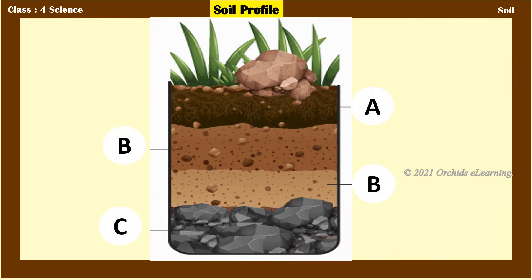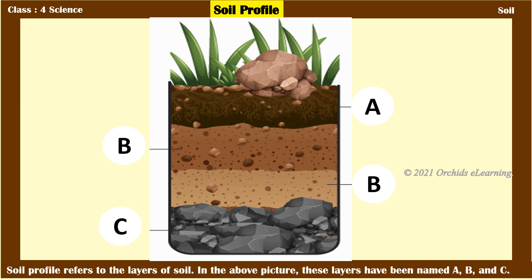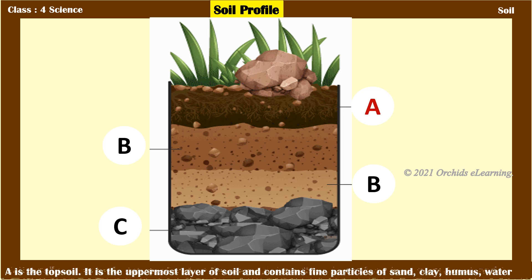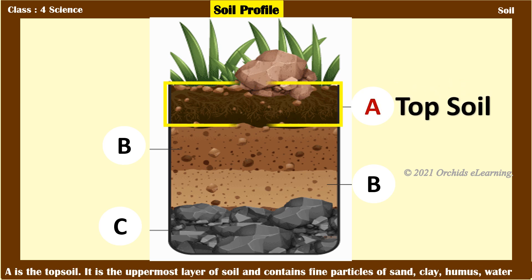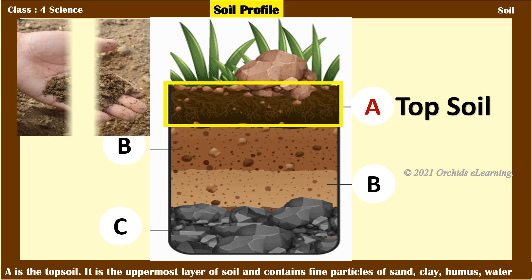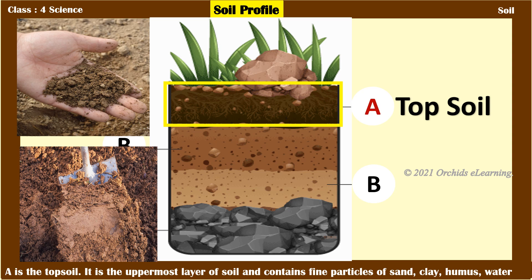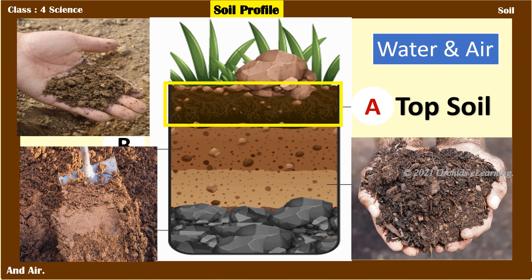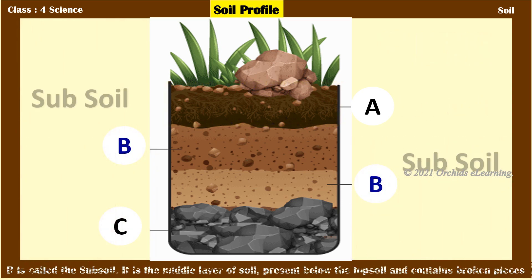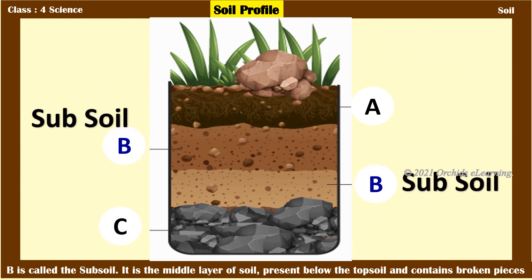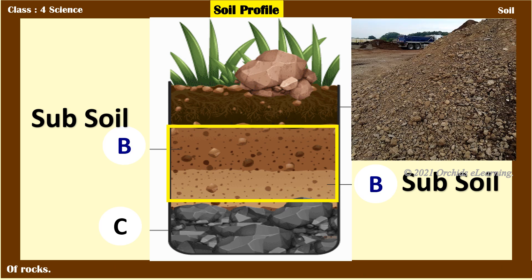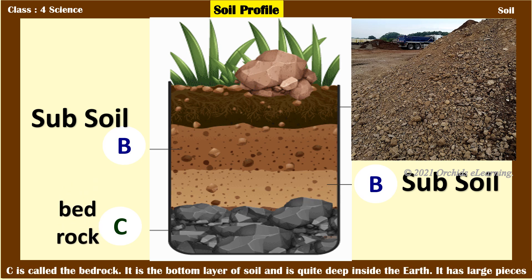Soil profile refers to the layers of soil. In the picture, these layers are named A, B, and C. Layer A is the topsoil — the uppermost layer, containing fine particles of sand, clay, humus, water, and air. Layer B is called the subsoil — the middle layer below the topsoil, containing broken pieces of rocks. Layer C is called the bedrock — the bottom layer, quite deep inside the earth, with large pieces of rocks.